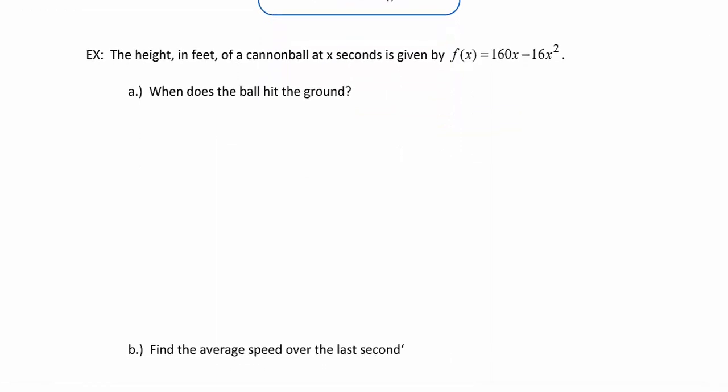The height in feet of a cannonball at x seconds is given by f(x) = 160x - 16x². We want to know when does the ball hit the ground. We don't need calculus for that. We just want to know when the height, which is our f(x), is equal to 0. So all we need to do is set our equation equal to 0 and solve.